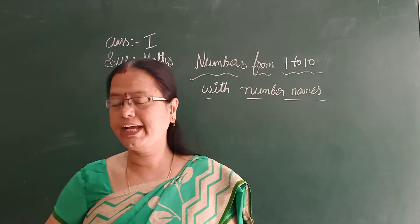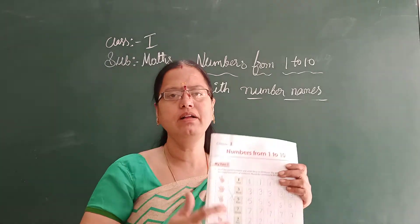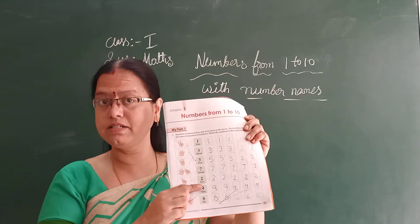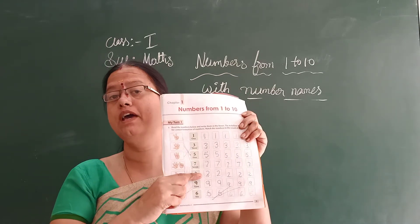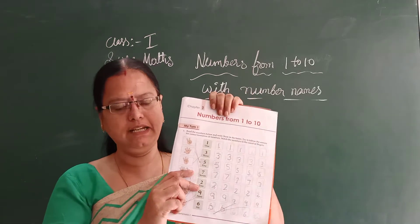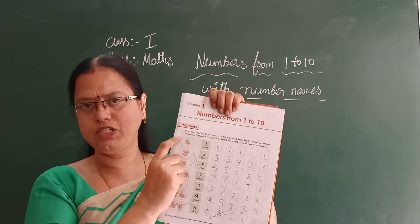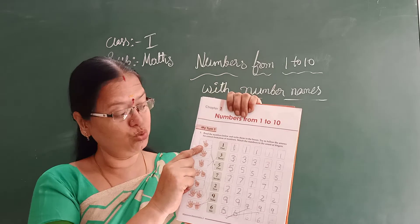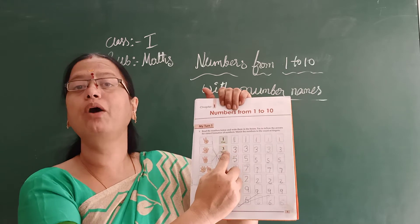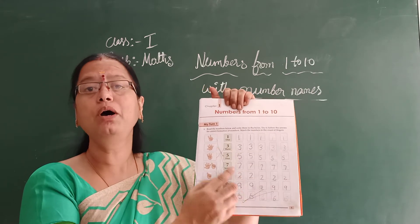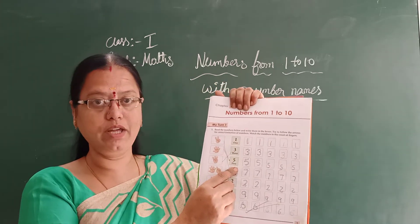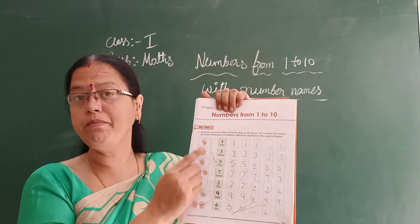Now all of you open your textbook to page number 1. See here — some fingers are shown, numbers are there, and number names are also there. This is your workbook. You have to do it neatly. See the first picture in the first box — see how many fingers are there, identify the number, and match the number with the number name.